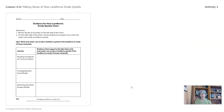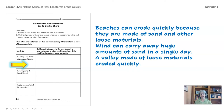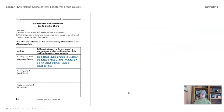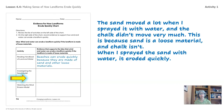From the book: beaches can erode quickly because they are made of sand and other loose materials. Wind can carry away huge amounts of sand in a single day. A valley made of loose materials erodes quickly. From investigating the sand model: the sand moved a lot when sprayed with water and the chalk didn't move very much. This is because sand is a loose material and chalk isn't. When the sand was sprayed with water, it eroded quickly.